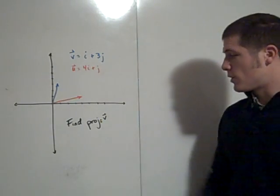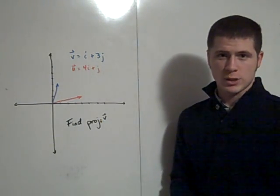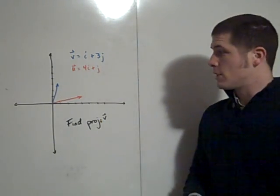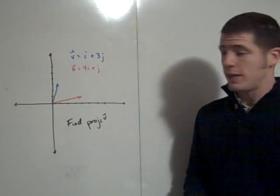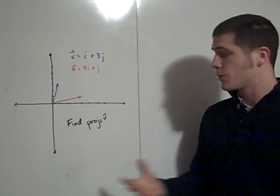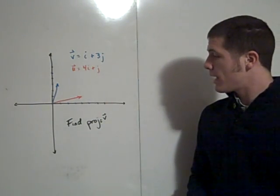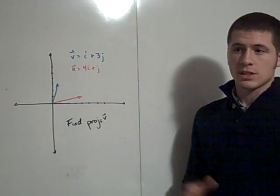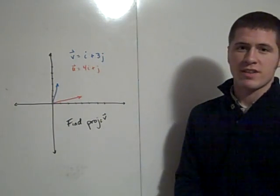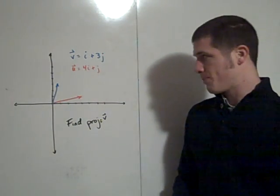This is useful for a couple of reasons. First, it's useful for finding work in physics — how much work you do. It's also a good application of the dot product of two vectors.